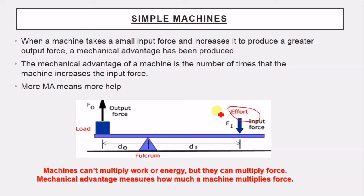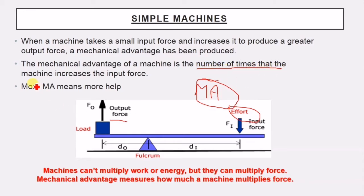When a machine takes a small input force and increases it to produce a larger output force, we have something called mechanical advantage. Mechanical advantage (MA) is the number of times that the machine increases the input force. If you exerted 100 newtons and the output force is 200 newtons, the machine doubles your force — the mechanical advantage is 2.